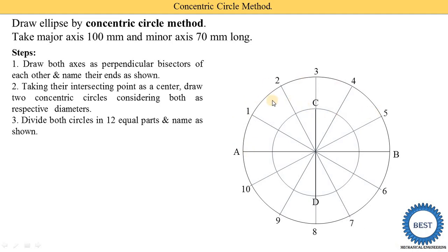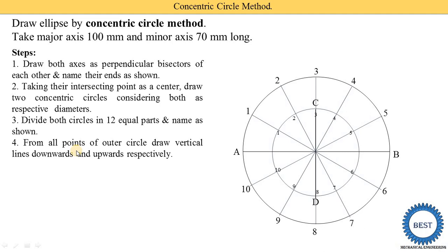Give names to all divisions starting from point one through to ten or you can start from point A. Also give names to the inner circle divisions — the outer circle divisions are the points on the larger circle, and the inner circle divisions are the corresponding points on the smaller circle, labeled one through ten.